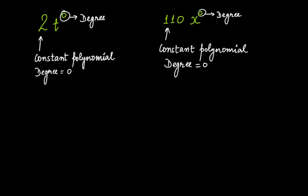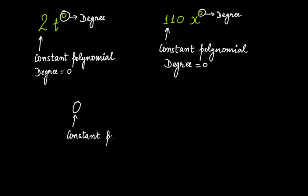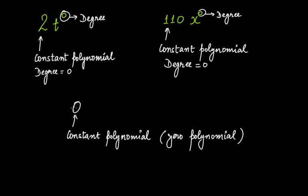What if your number is now zero? If your number is zero, this is also a special kind of constant polynomial — it's called the zero polynomial. Why constant? Because it's always zero; it's not going to change, it will always be zero. But unlike the other constant polynomials we saw, like 2 and 110, its degree is not defined.